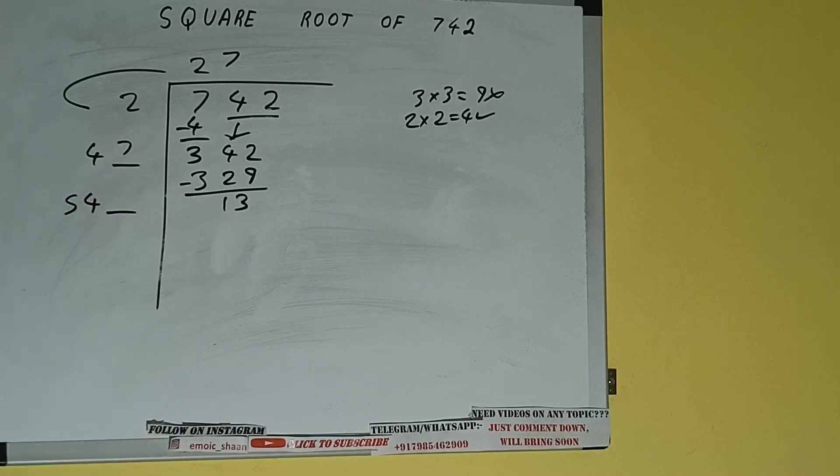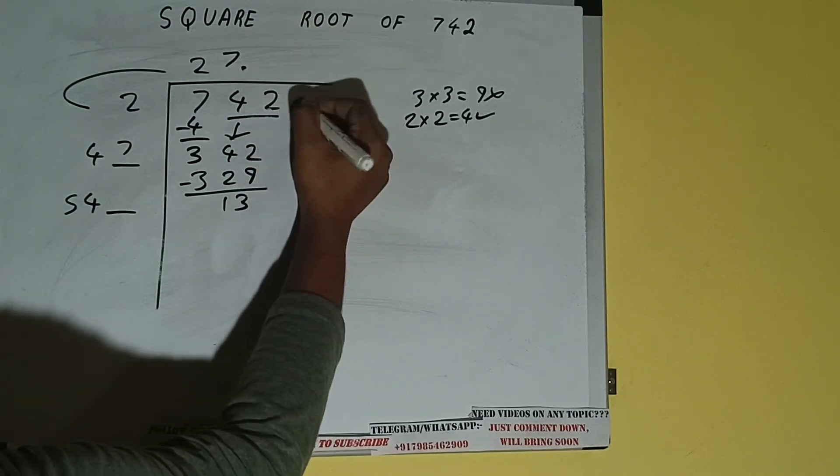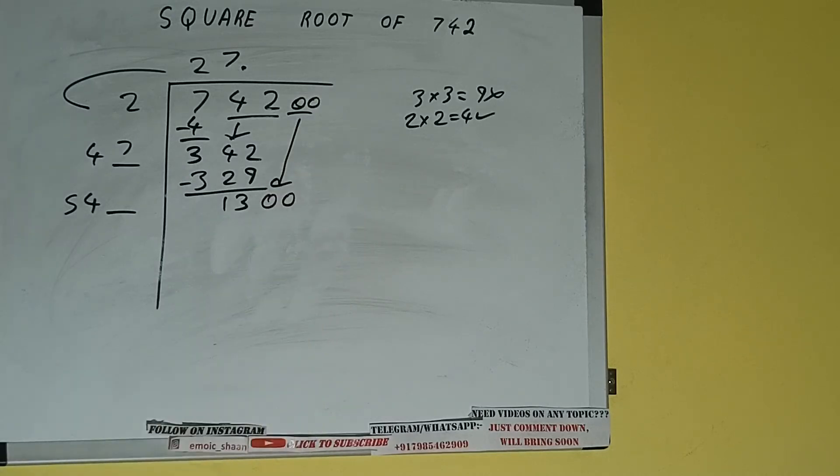And this number we need to make it big, but we don't have more pair so we put decimal. Once we put decimal we can bring pair of zeros down and it will be 1300.